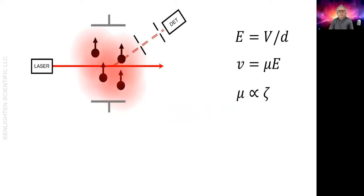This varies with time in a similar way to a sound signal. You can use a spectrum analyzer to see the frequency components of the sound, and you can do the same thing to see a spectrum or distribution of the Doppler shift frequencies of the scattered light.